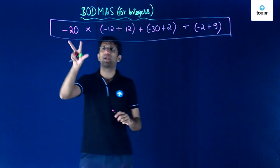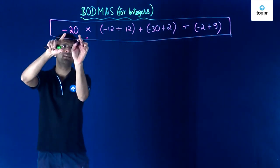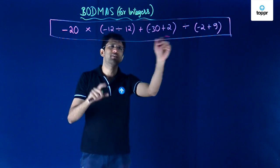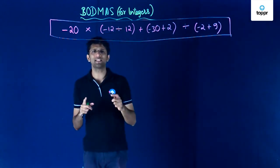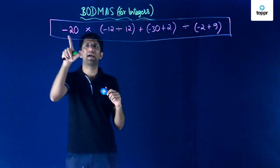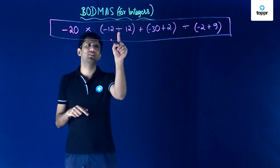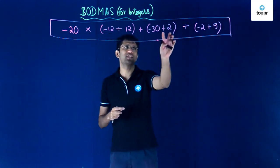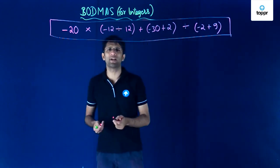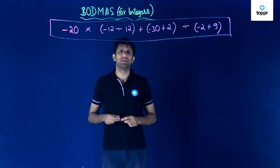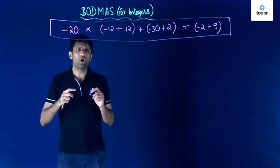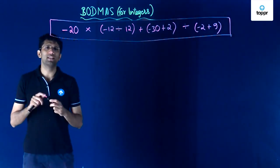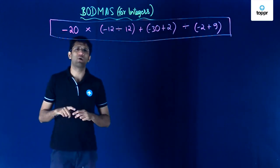We have this expression which has minus 20, then a multiplication sign, then a bracket, and then many more operators. So in this expression there are many operators: there is a minus, a multiplication, a division, brackets, and also an addition sign. Because we cannot apply the operators in any random order, the BODMAS method becomes very important.